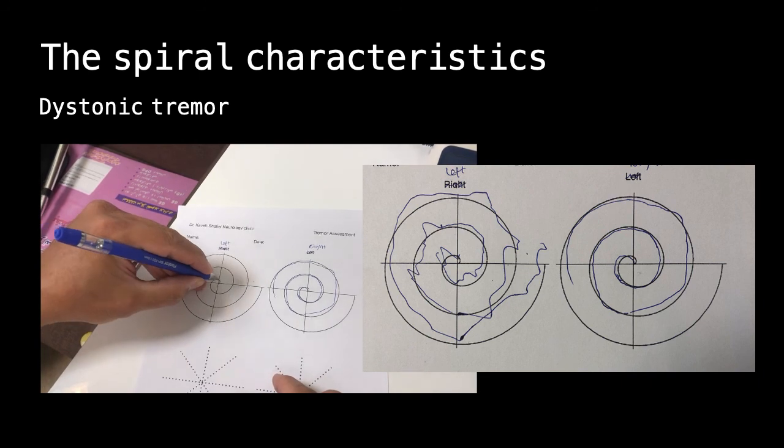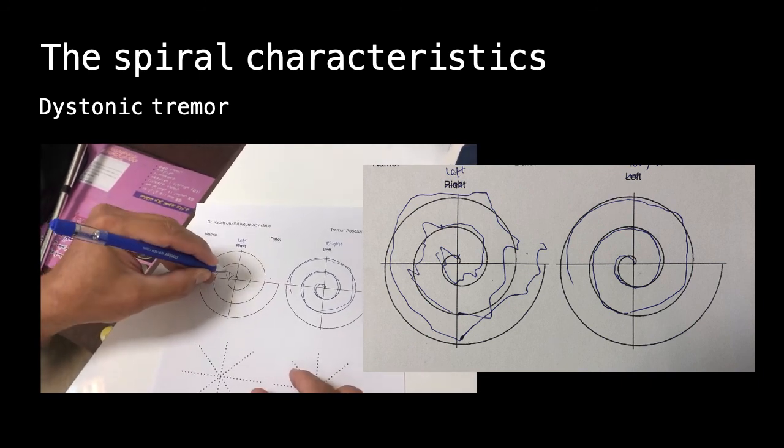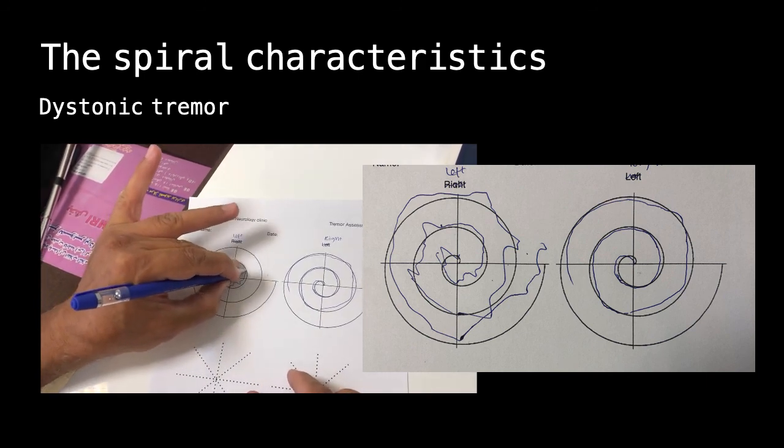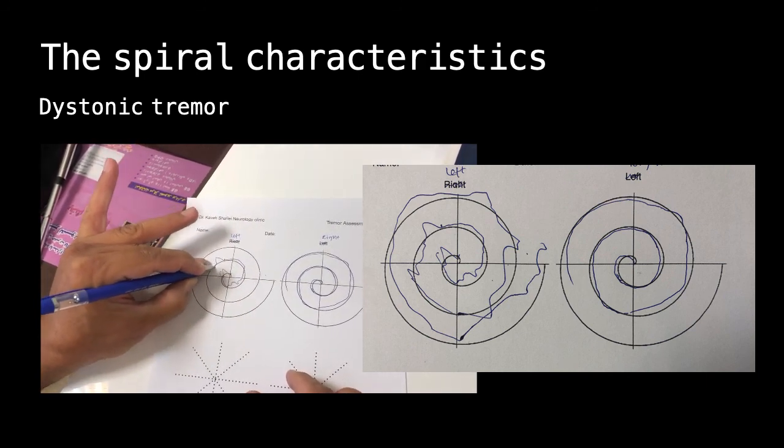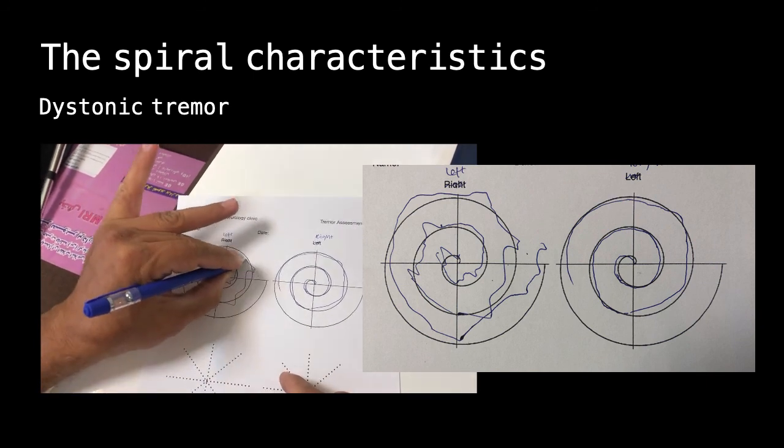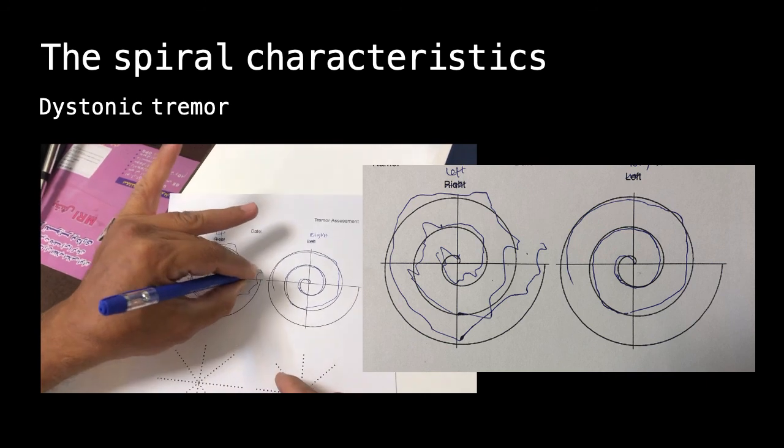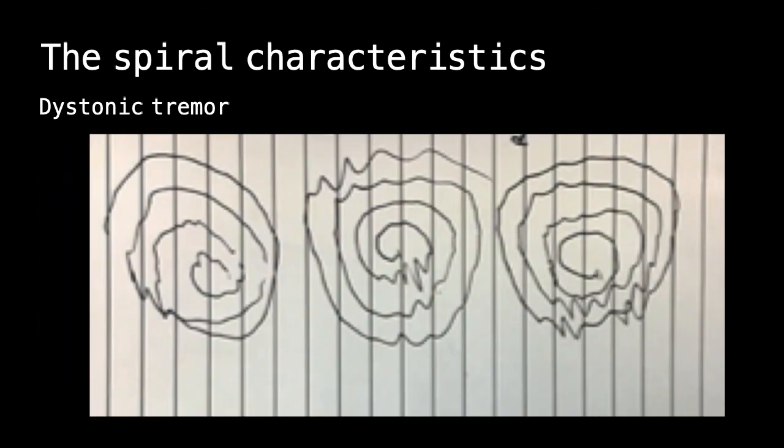Dystonic tremor is asymmetric tremor. During the task, you can see bad postures and asymmetric and jerky movements during spirals. As the task goes on, you can see how tremor gets worse. In the spirals for dystonic tremor, this picture shows it very well.